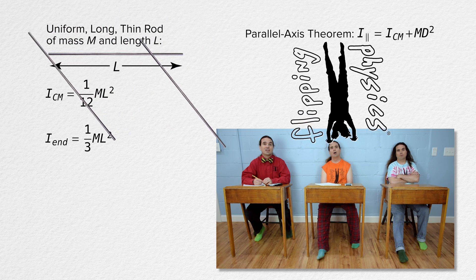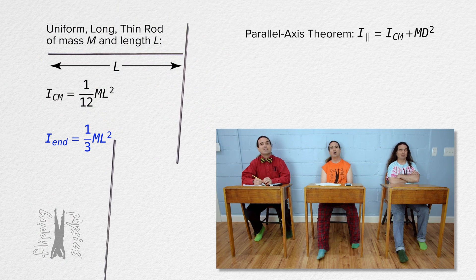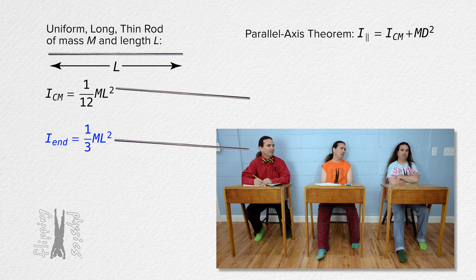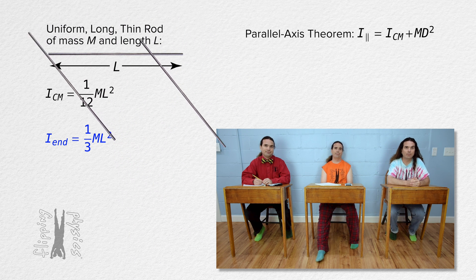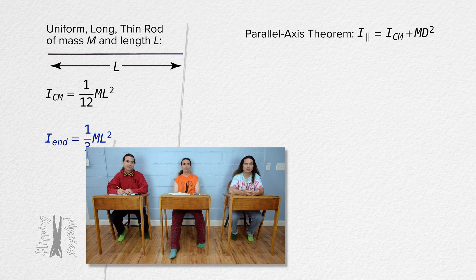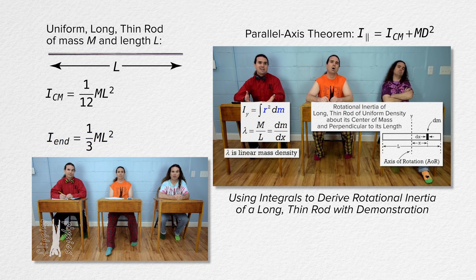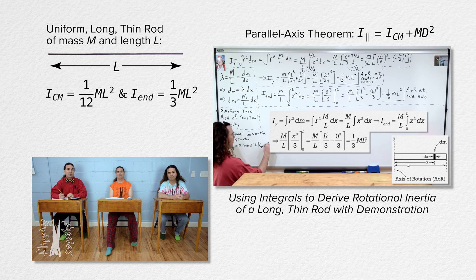Flippin' physics! One third total mass times length squared. No, sorry Bo, that is just the answer. I need you to show me a solution which arrives at that answer. We already did it before. Yeah, and it was really complicated. Mr. P's point is that it is much easier when we use the parallel axis theorem.